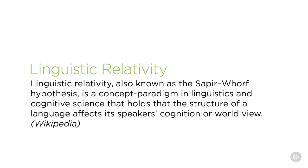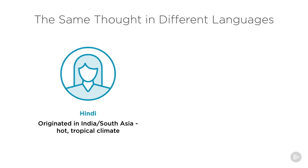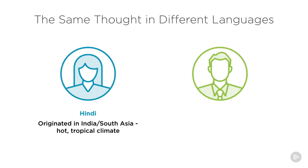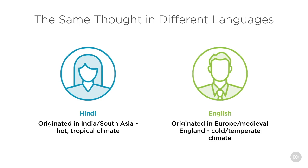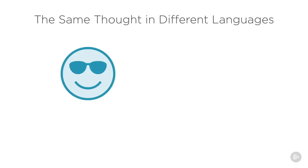The answer in a nutshell is because our language determines our world. That is also the basis of a concept known as linguistic relativity — a rather arcane concept from psychology. Let's consider the same thought expressed in two different languages. One of those languages is Hindi, which originated in India or South Asia where the climate is hot and tropical, and the other is English, which originated in Europe — more specifically in medieval England where the climate was cold and temperate. Let's say that you were describing a person with a charming personality: the way in which you do so would differ quite starkly in these two languages.